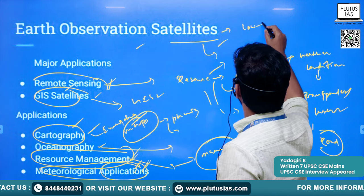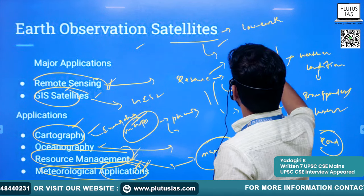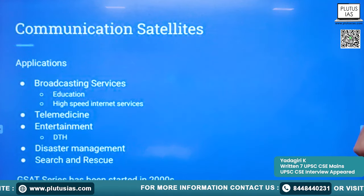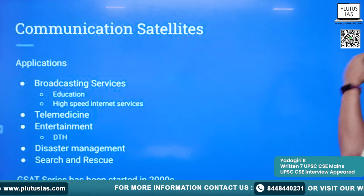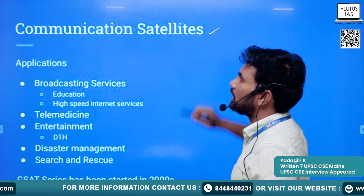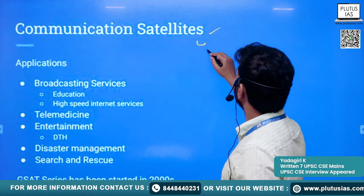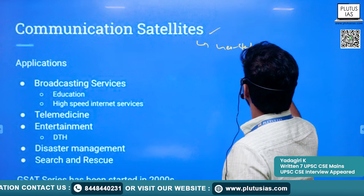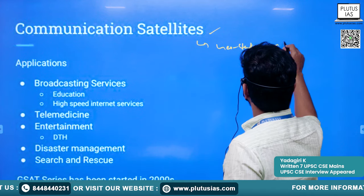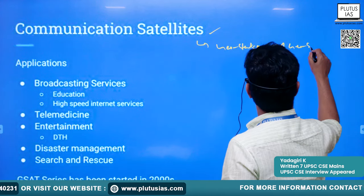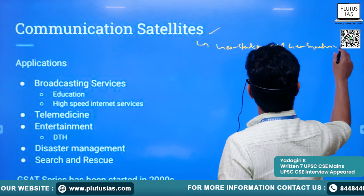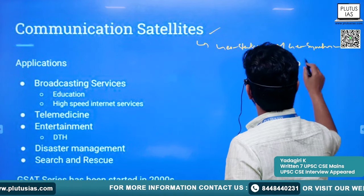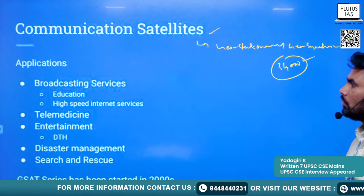Earth observation satellites are generally placed in low earth orbit. Next are communication satellites — they are placed in geostationary orbit or geosynchronous orbit, with a distance of approximately 36,000 kilometers from the surface of the earth.